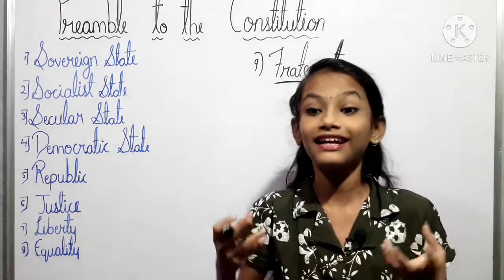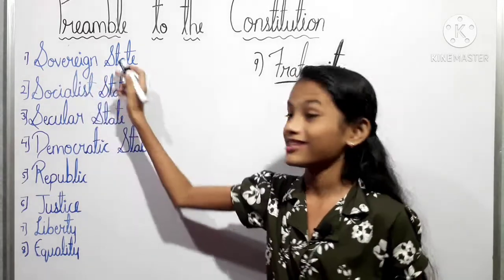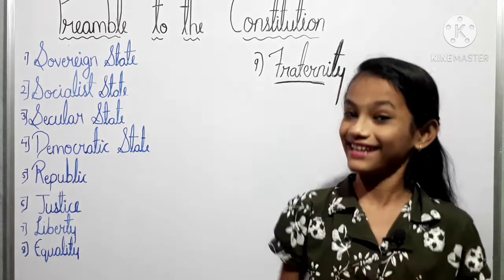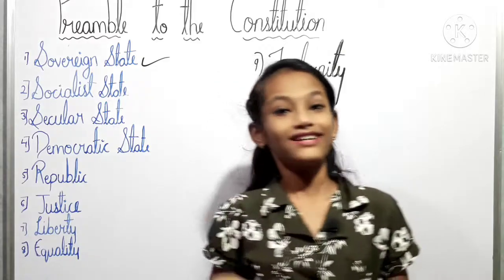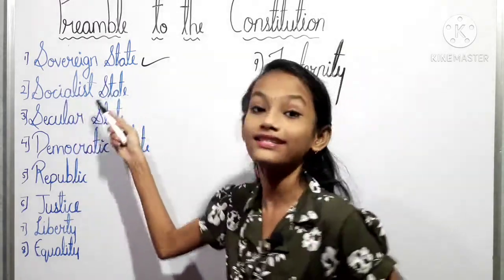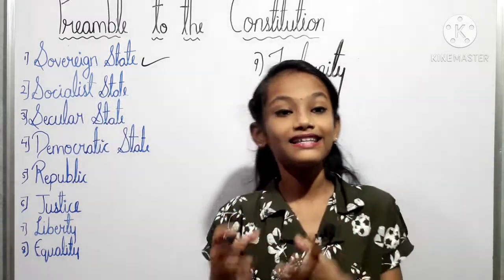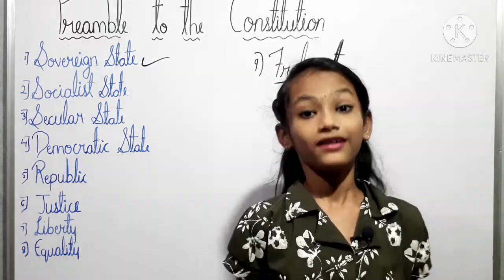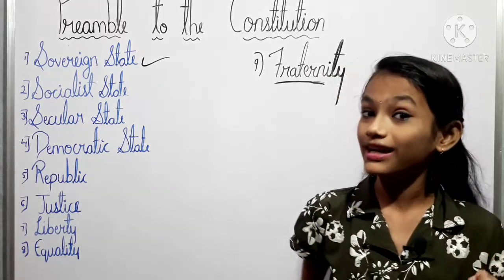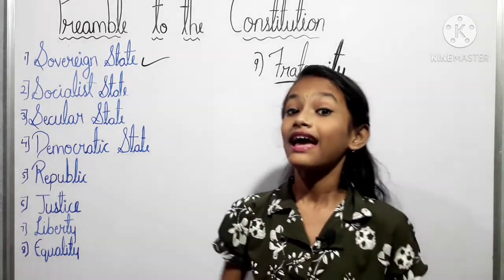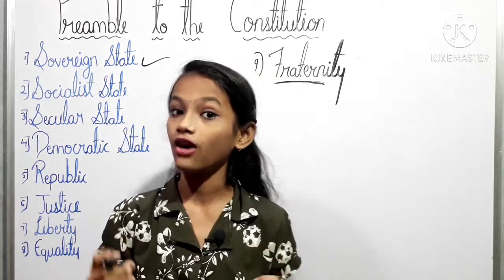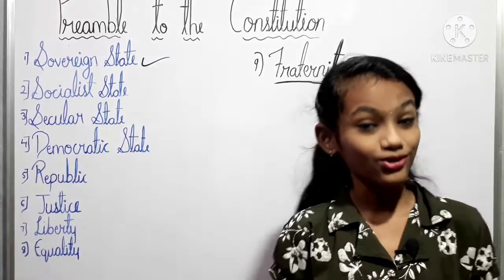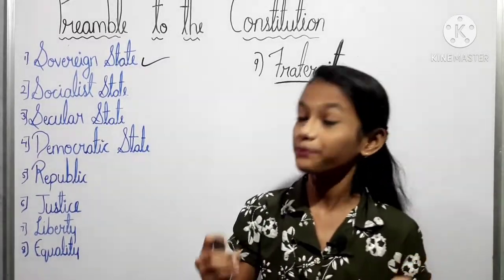Our second point is the socialist state, meaning Samajik Rajya. The socialist state is such a state where the gap between poor and rich is minimum. Everybody has the right over the wealth of the country, but it is ensured that the wealth is not concentrated in the hands of a few people.